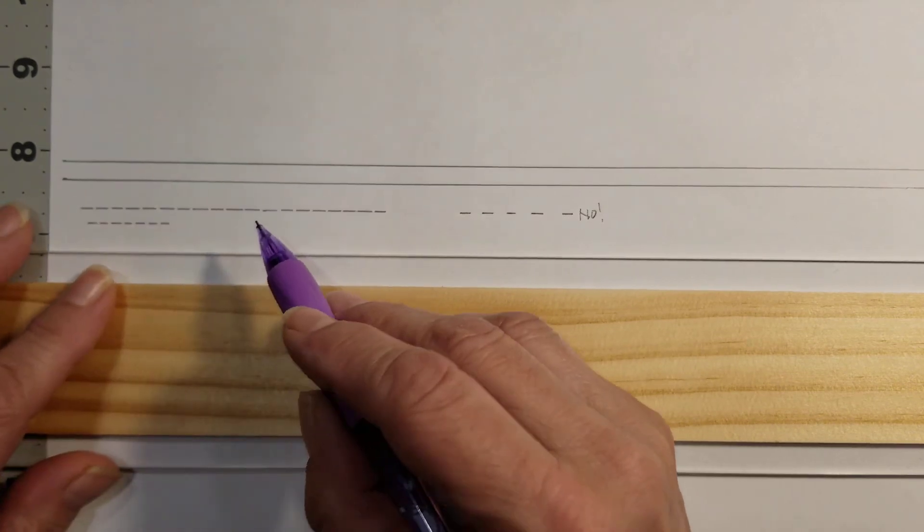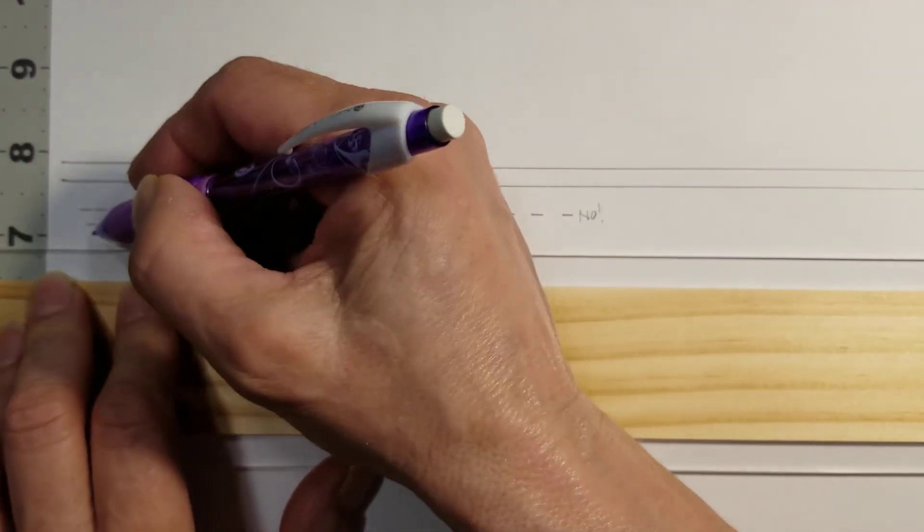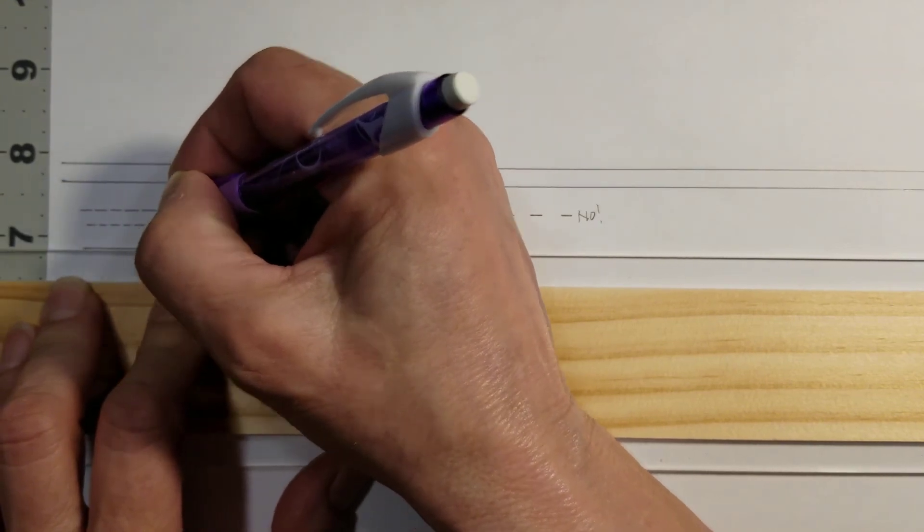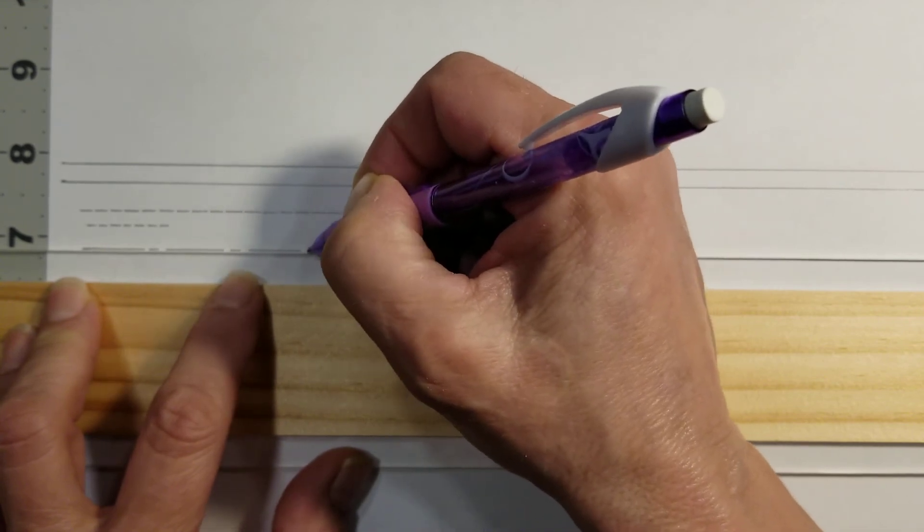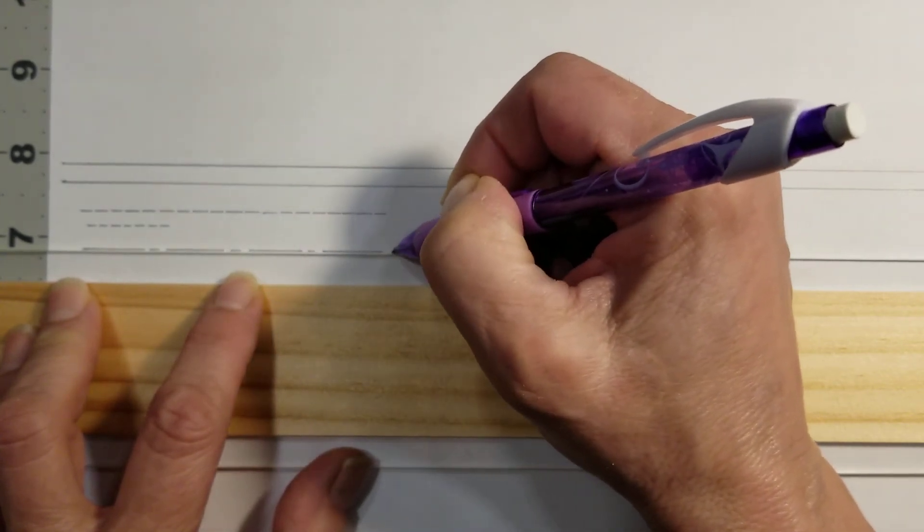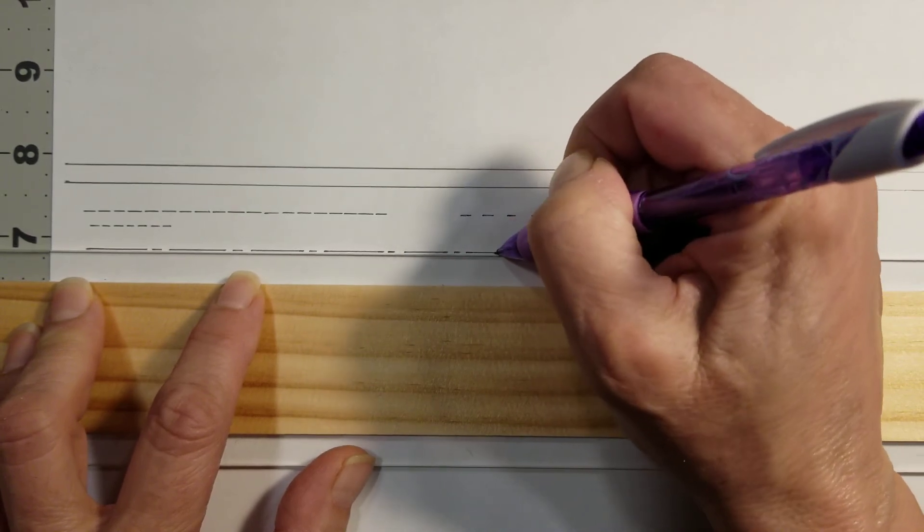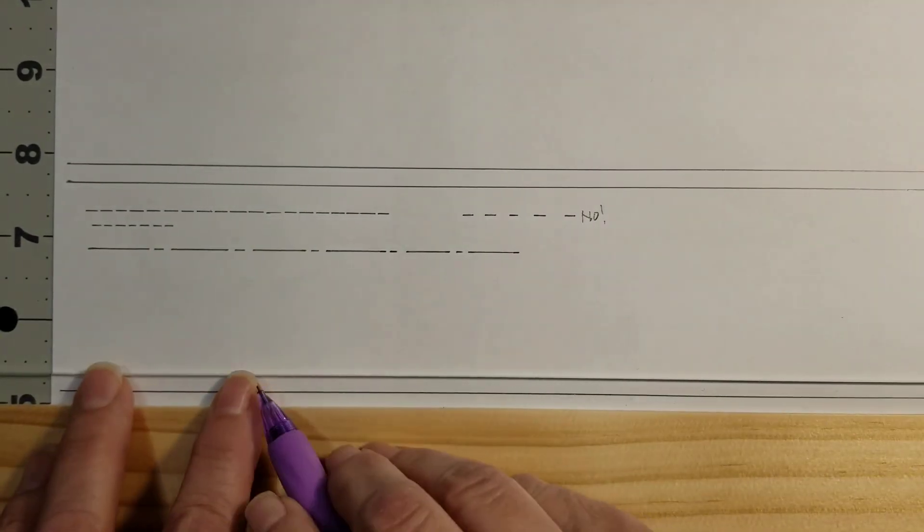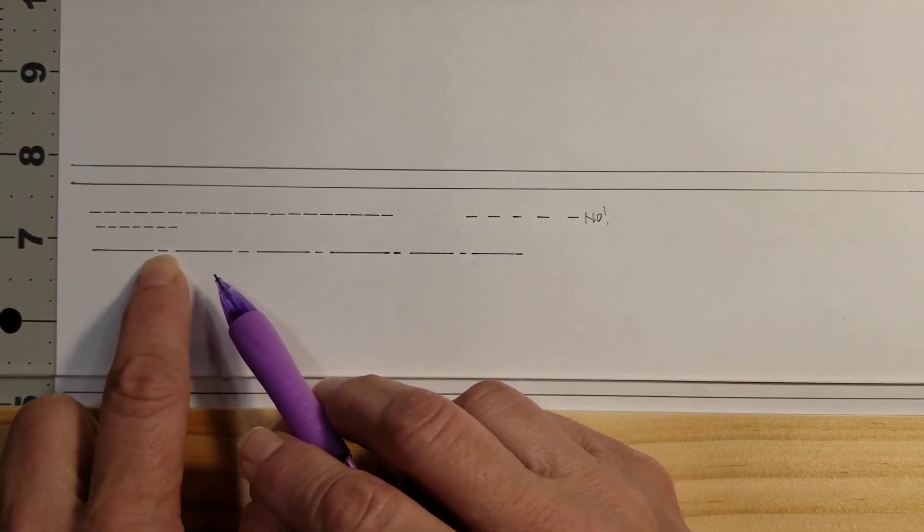Okay, so there's a hidden line. Now I'm going to draw a center line. So a center line is a long line, a short line, a long line, a short line, a long line, a short line.